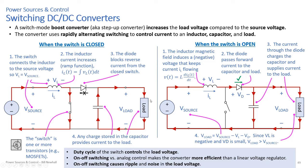Student question: what controls the MOSFET switching? There's a controller with an oscillator built into the integrated circuit — it has a feedback loop adjusting the pulse width modulation. If you were building your own, you'd use a microcontroller sensing the load voltage and adjusting the PWM of the switch to increase or decrease the output voltage accordingly.